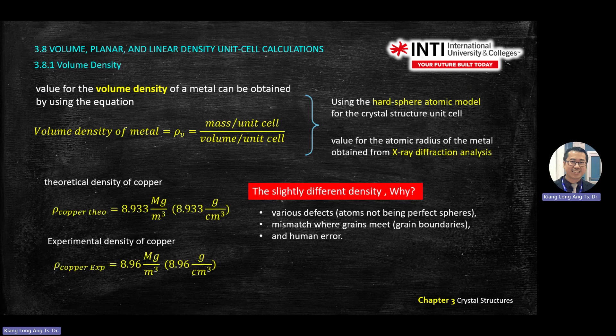That's why the value is a bit higher compared to theoretical. These are the factors that give you error. Like when you do your lab later, we will give you one value, then through experiment you measure, so you need to explain why there is a difference. For this case, it's because of defects. We will have one chapter on defects, then mismatch of grain — also a defect — and human error. Or it might also need to include machine error.